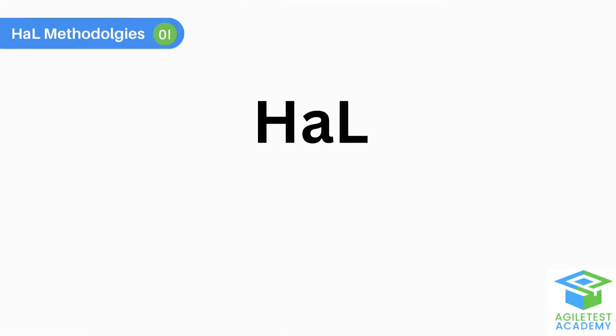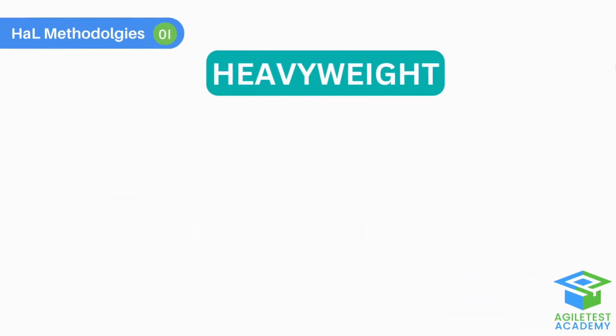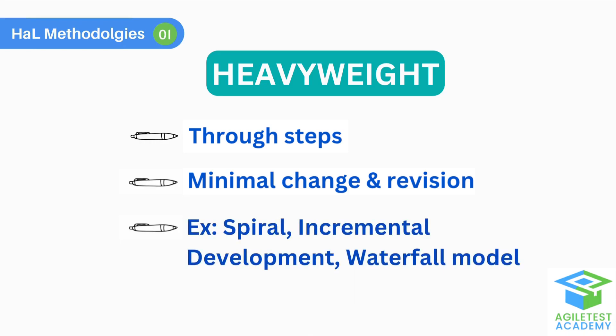First, we will learn about the HAL methodologies, shortened for heavyweight and lightweight. Heavyweight is when the development team works through steps slowly and systematically, with the aim of fully completing each step and developing a complete software product that only requires minimal changes and revision. Examples include spiral, incremental development, and the waterfall model.